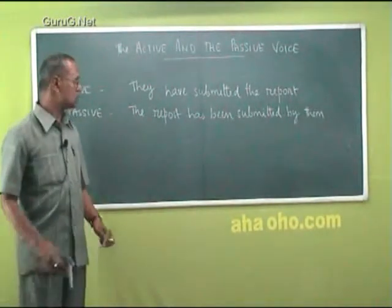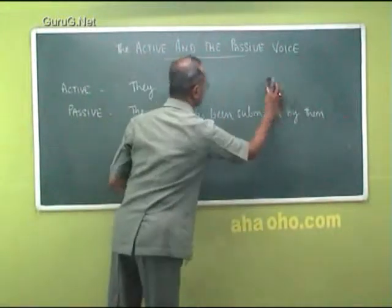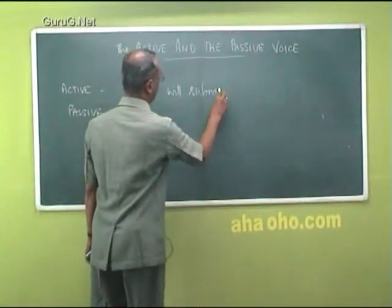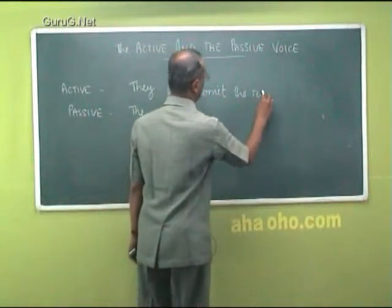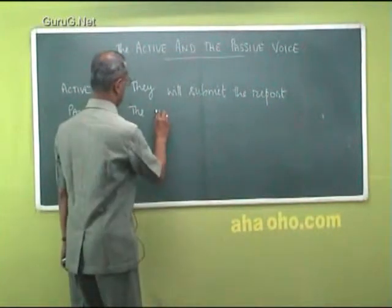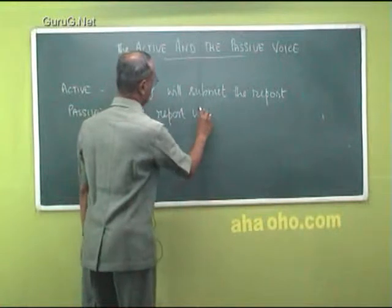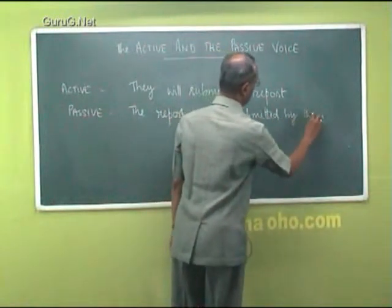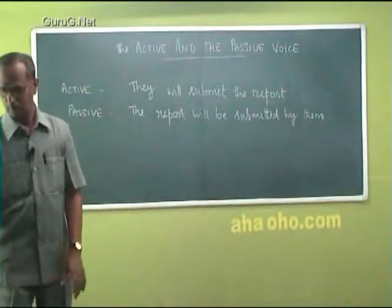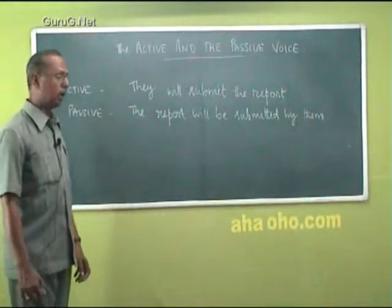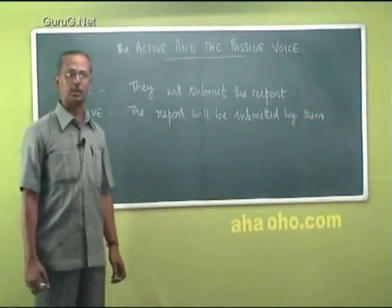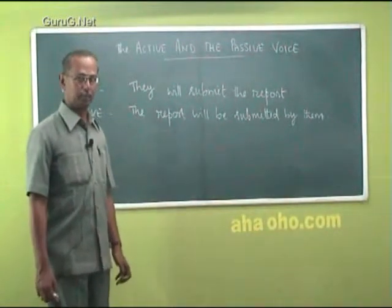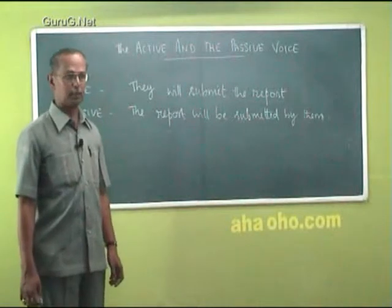The next one is the future tense. 'They will submit the report.' The simple future tense is used in this active construction. The passive form of the same sentence would be 'the report will be submitted by them.' The same tense has to be kept up even in the passive construction.